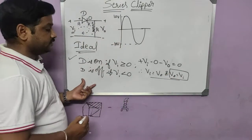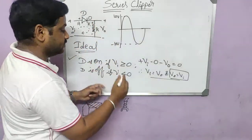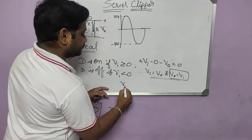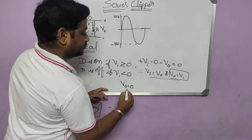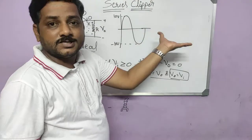And if the diode is OFF, it is an open circuit, so the output voltage will be equal to zero.